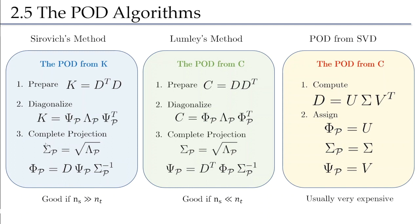As a last note, the amplitudes computed here are mesh-dependent estimations of the POD amplitude — changing the number of points will change the values. For a mesh-independent estimation, associate the inner product to the continuous domain where it is an integral. Using a forward integration scheme, divide the inner product by the number of points: by Ns in the space domain and by Nt in the time domain. The Modulo software package handles this automatically, providing outputs already in a normalized, mesh-independent form.